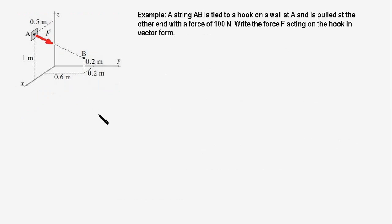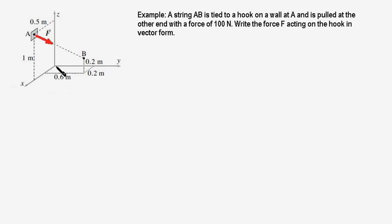Based on what we learned, we'll now write the force F in this particular problem. Here, AB is a string which is pulled in this direction with a force of 100 newtons, and this end of the string is attached to a hook. The force acting on the hook is of magnitude 100 newtons and its direction is along AB. We have to write this force F in vector form, so we first write the position vector AB — this is a relative position vector since it is not from the origin.